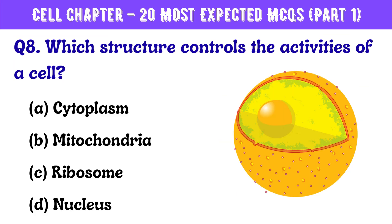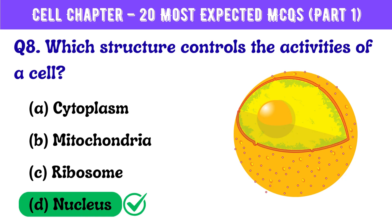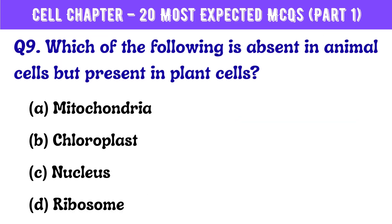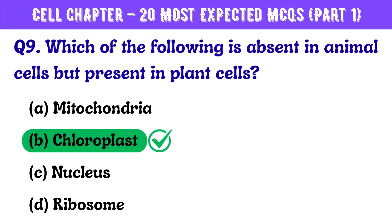Question number 8. Which structure controls the activities of a cell? Correct answer is option D: Nucleus. Question number 9. Which of the following is absent in animal cells but present in plant cells? Correct answer is option B: Chloroplast.